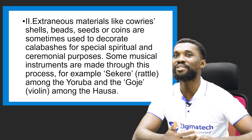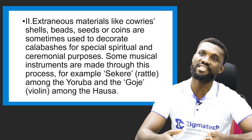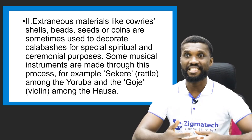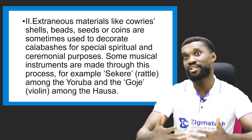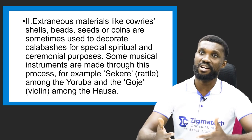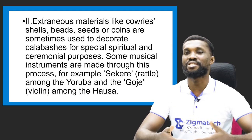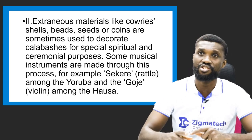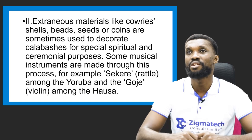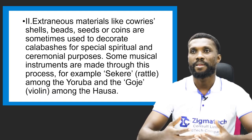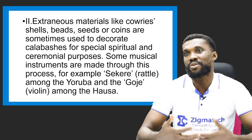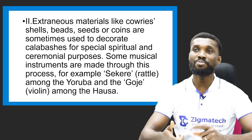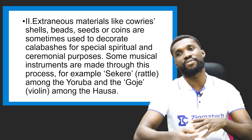Extraneous materials like cowries, shells, beads, seeds, or coins are sometimes used as decoration and tools on calabash for special spiritual and ceremonial purposes. Sometimes they use this calabash to carry and store all these items. Some musical instruments are also made through this process from calabash.